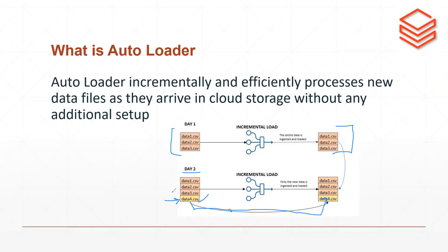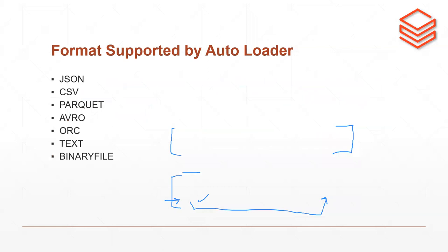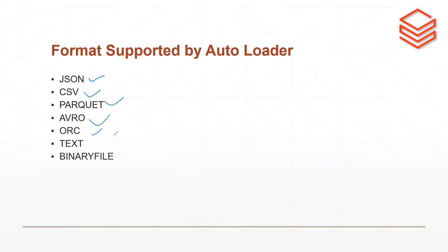The next question is: what file formats does Autoloader support? Most file formats are supported — JSON, CSV, Parquet, Avro, ORC, text, and binary files. So most of the source file formats in which data is typically generated can be handled by Autoloader.